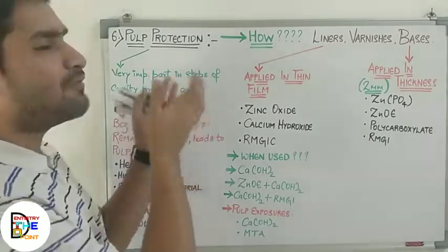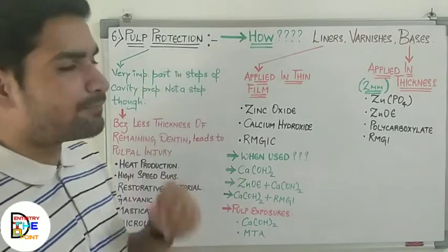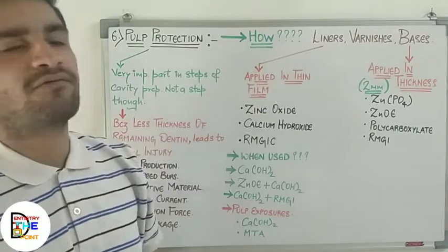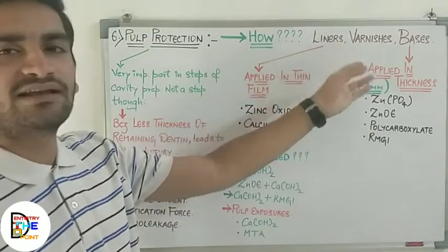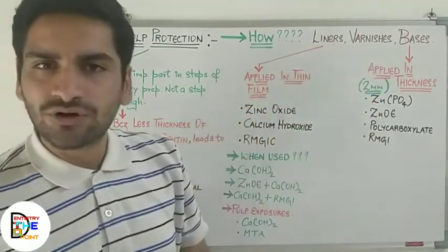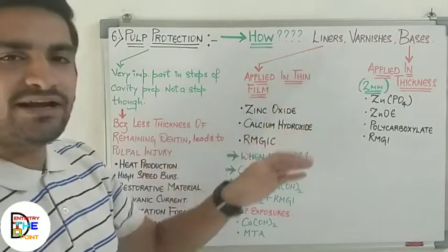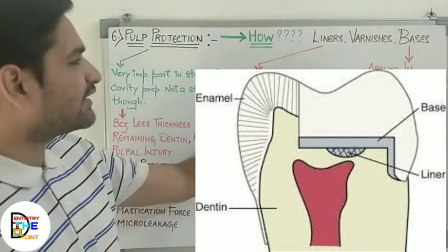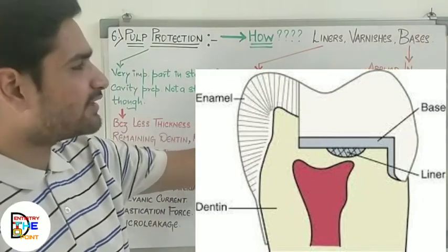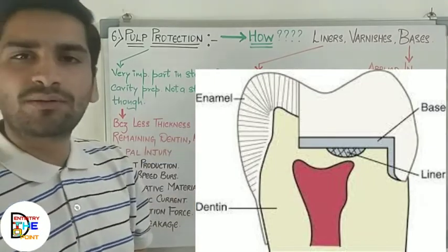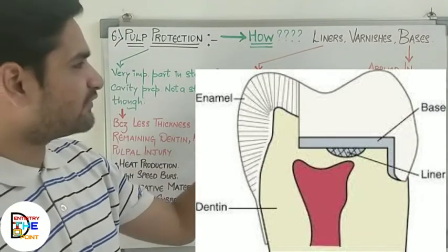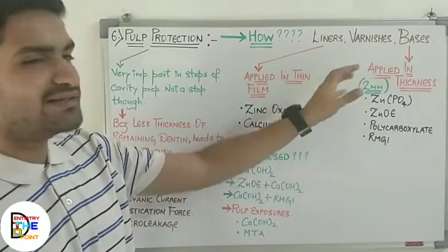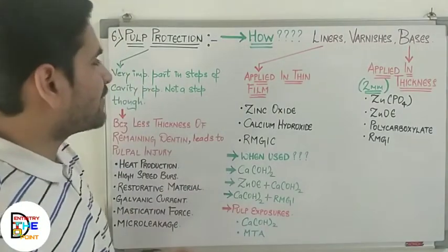Pulp protection will be achieved through liners, bases, or varnishes. Liners are materials which are applied in a thin film of 0.5 to 1 mm thickness, whereas bases are materials which are applied at a thickness of 2 mm. So there is a difference between liners and bases — liners are just a thin film, while bases are applied at 2 mm thickness.